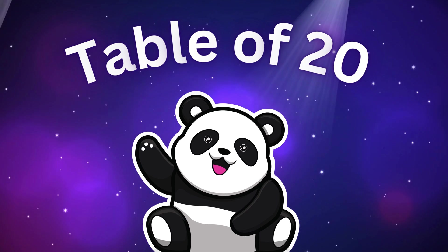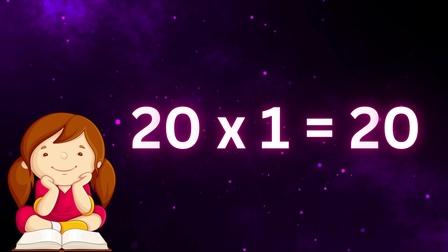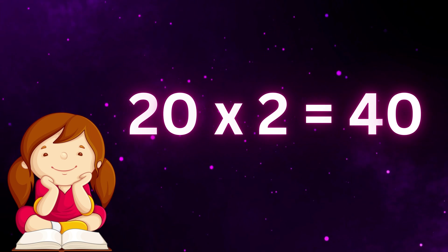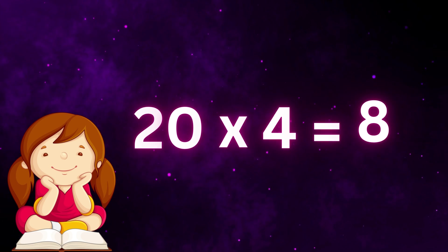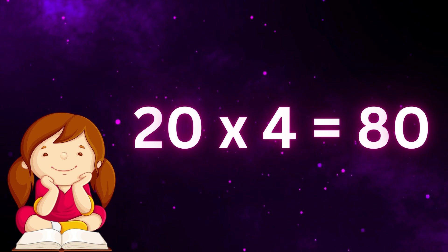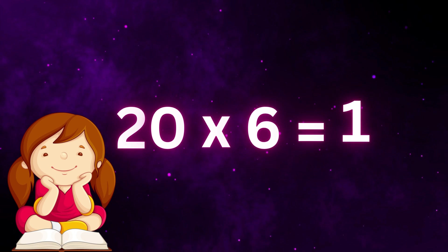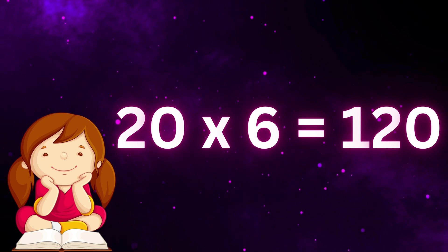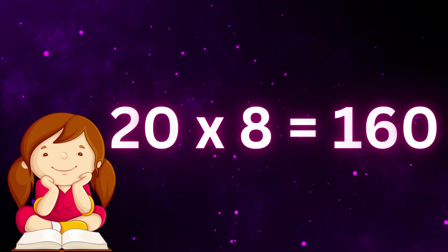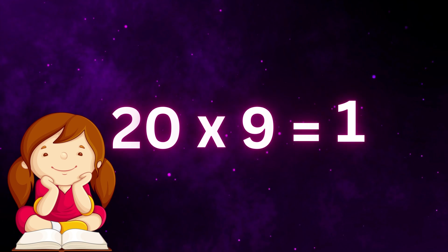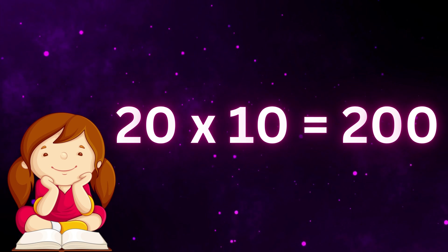Table of twenty: twenty ones are twenty, twenty twos are forty, twenty threes are sixty, twenty fours are eighty, twenty fives are one hundred, twenty sixes are one hundred twenty, twenty sevens are one hundred forty, twenty eights are one hundred sixty, twenty nines are one hundred eighty, twenty tens are two hundred.